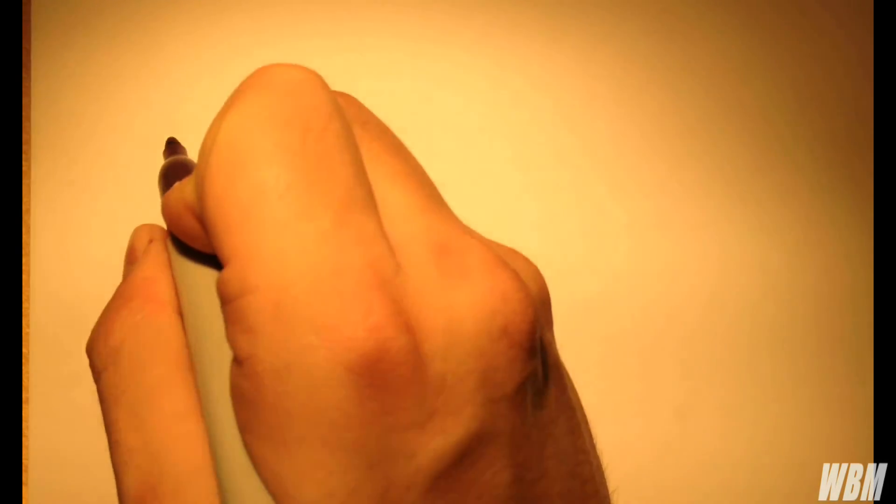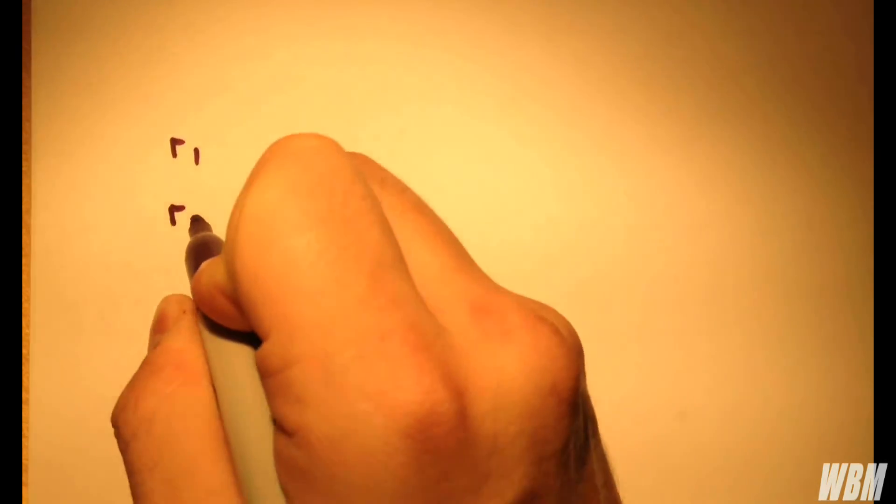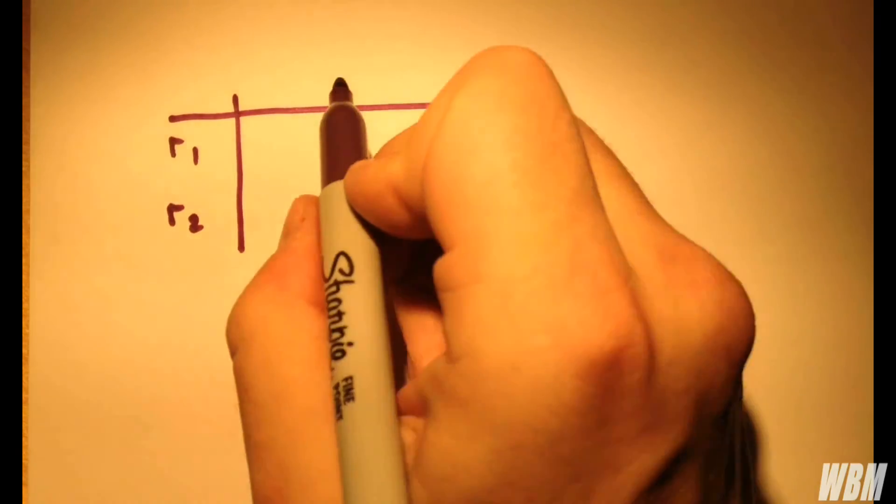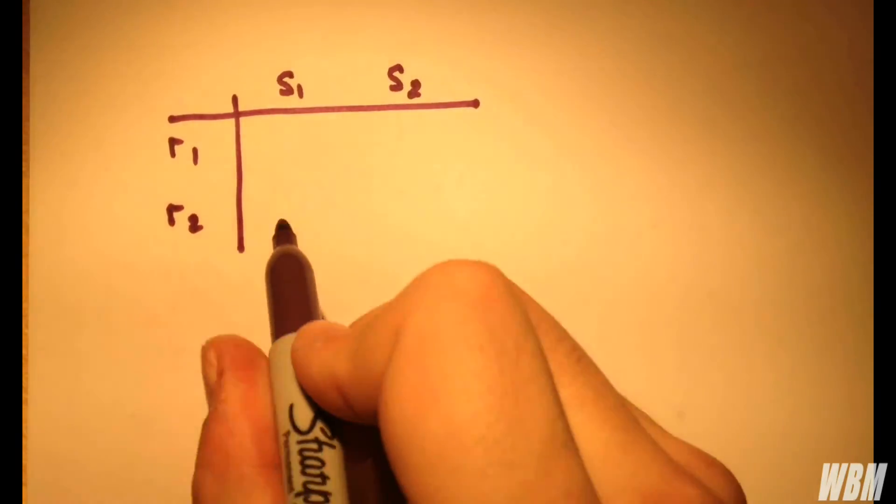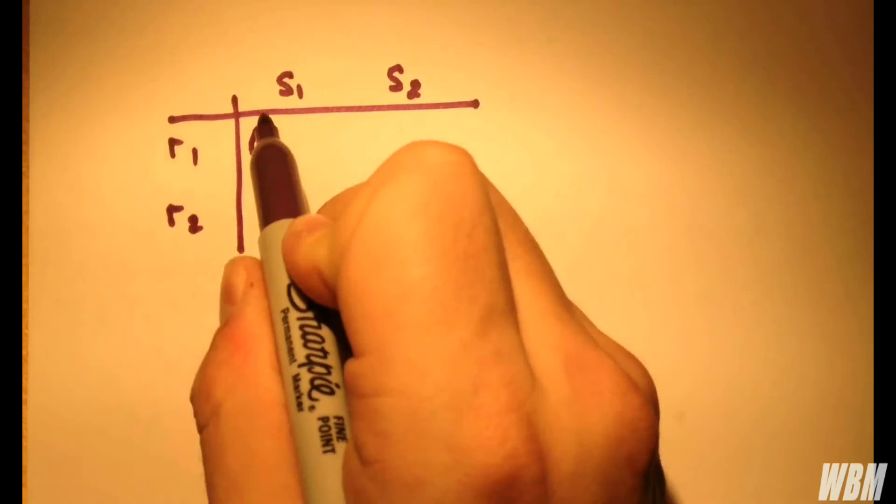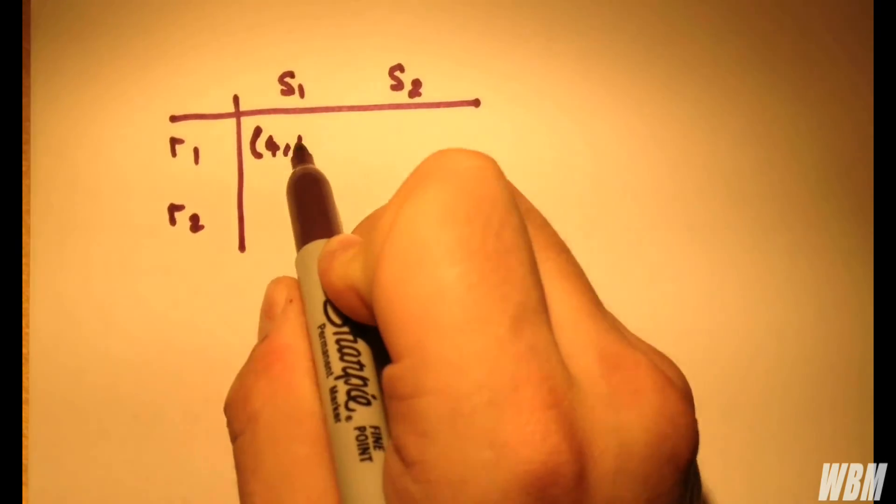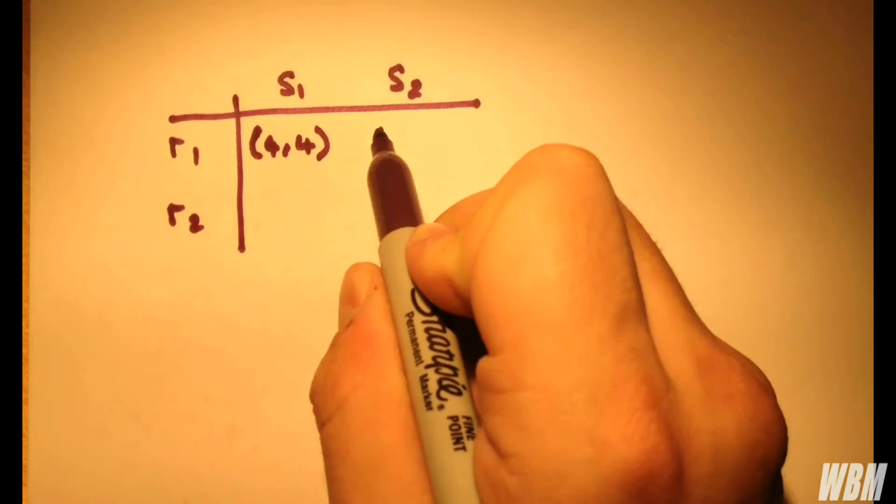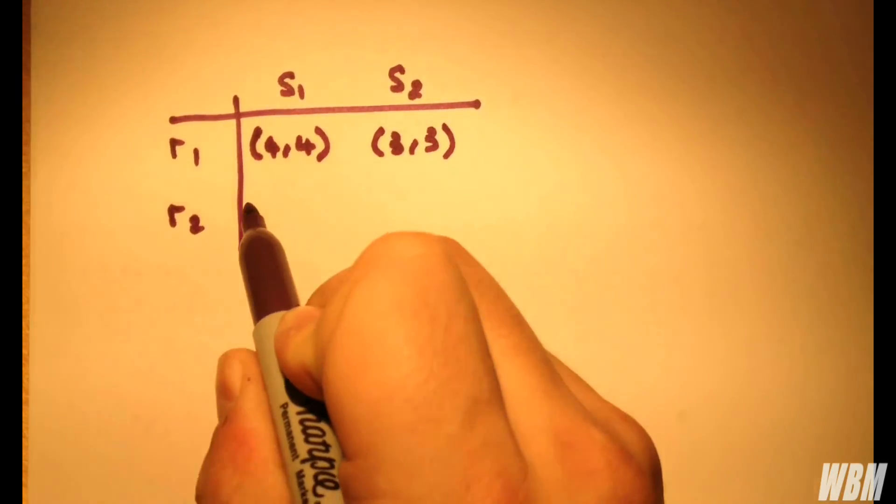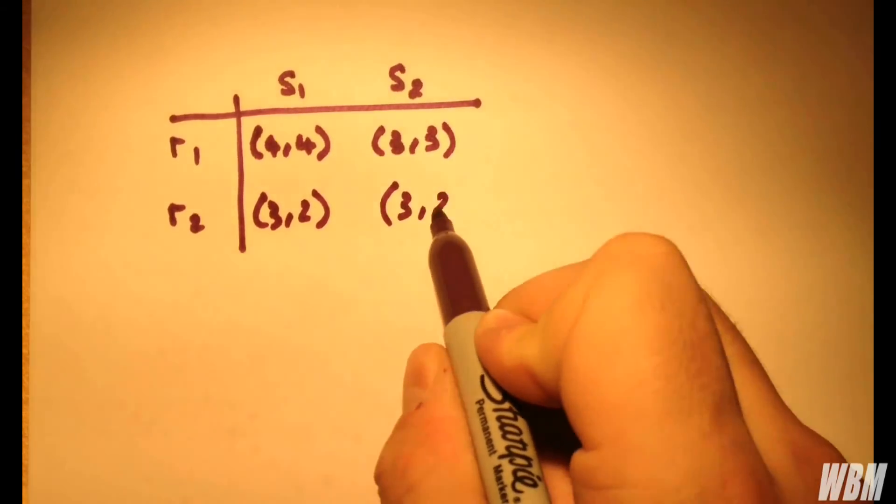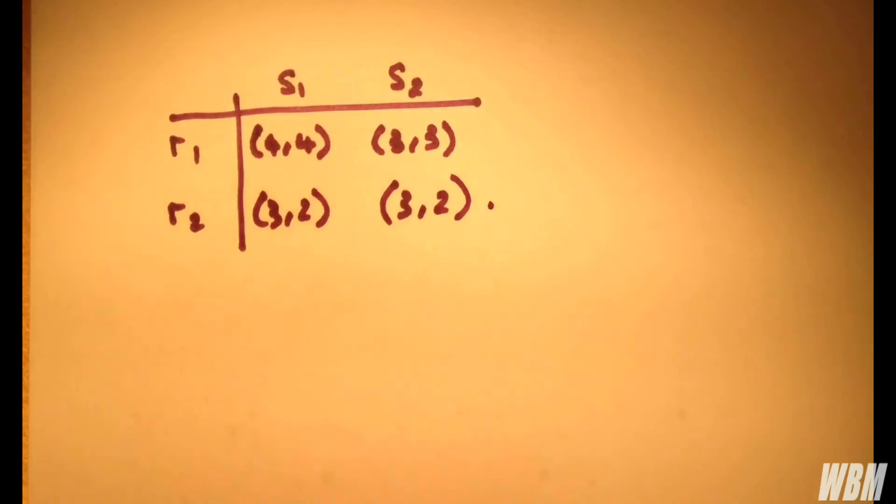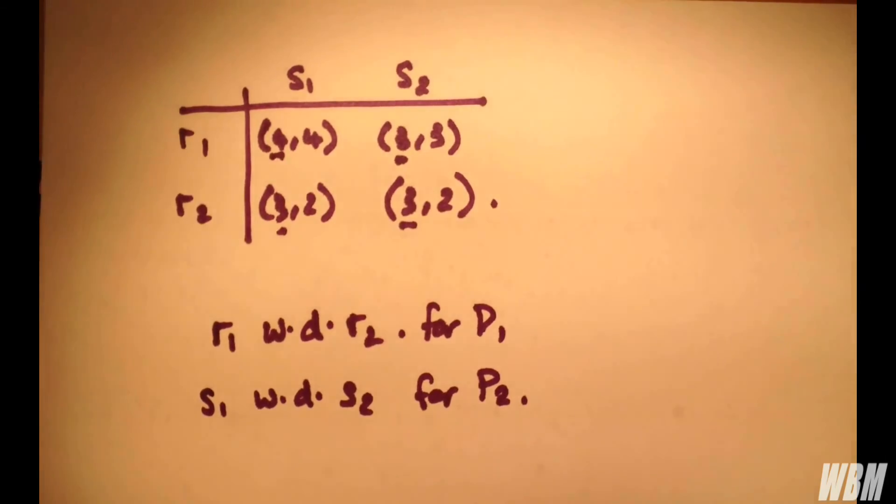So let's finish off by looking at a quick example. We'll have two strategies, R1 and R2, and two strategies, S1 and S2. This yields (4,4). This yields (3,3). We've got (3,2) here and (3,2) here.